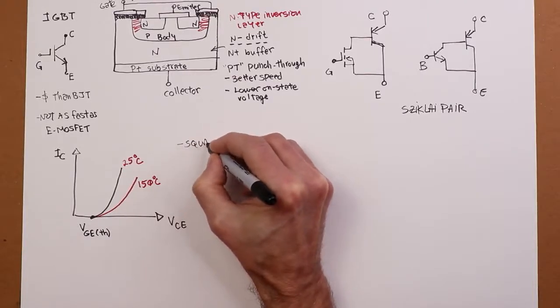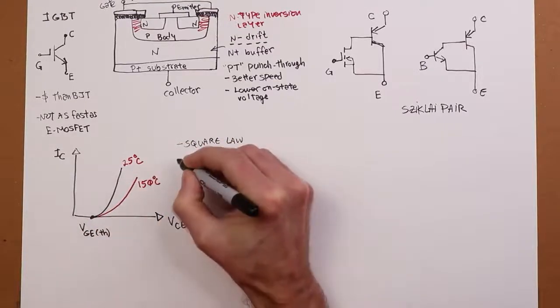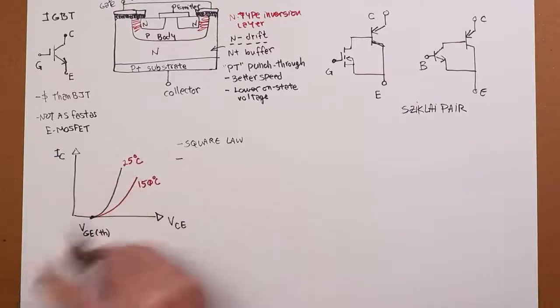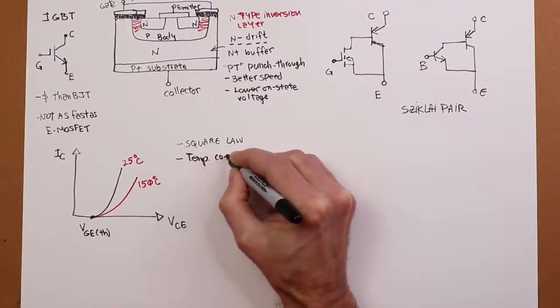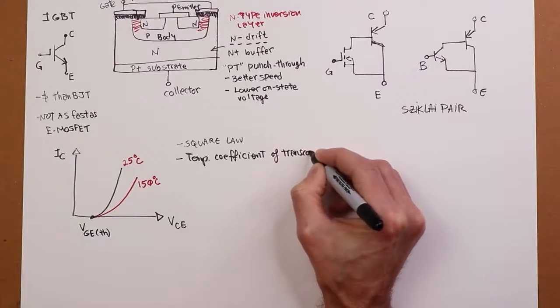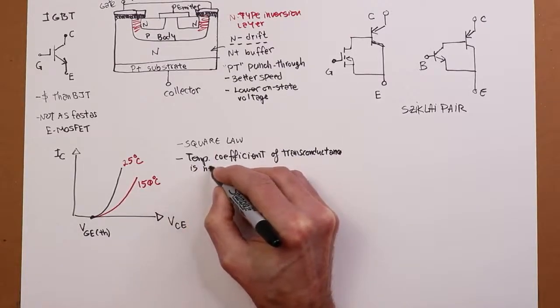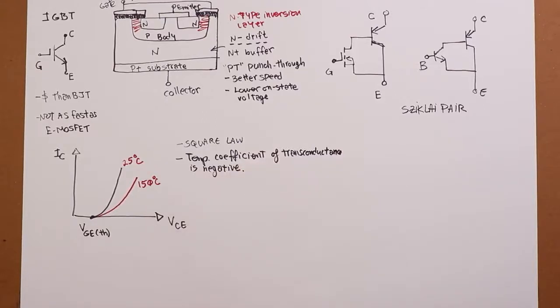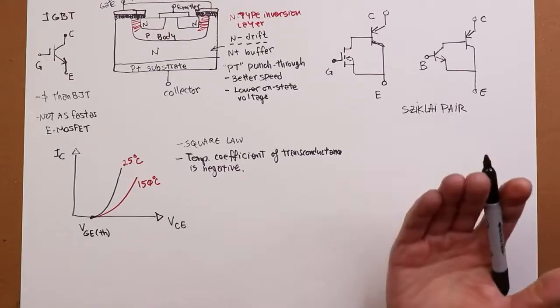What this means, a set of things. First of all, it's square law curve. So this varies as the square. Number two, this deal with the red curve being lower means that the temperature coefficient of transconductance is negative. That's great because that means less likelihood of thermal runaway. That's a problem with bipolars is that the temperature coefficient is positive. So as the thing heats up, it wants to conduct more. In this case, it heats up, it wants to conduct less. That's good. It's self-limiting.